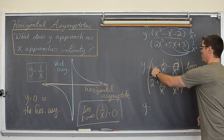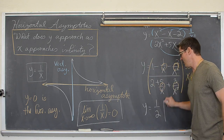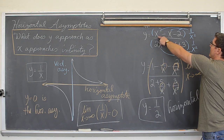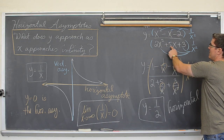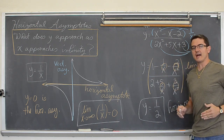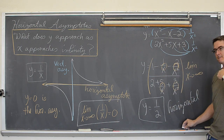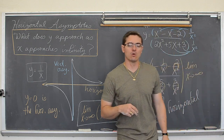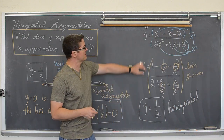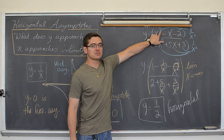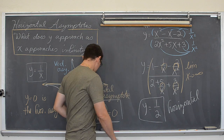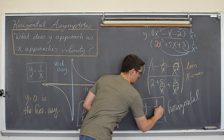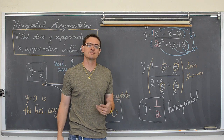So what is left after taking the limit? y equals 1 over 2. So this equation — x squared minus x minus 2 over 2x squared plus 5x plus 3 — may have vertical asymptotes if the denominator can equal zero, but the horizontal asymptote is y equals one half. That is your second rule for finding horizontal asymptotes of rational functions: if the degrees are the same, the horizontal asymptote is y equals the ratio of the leading coefficients.